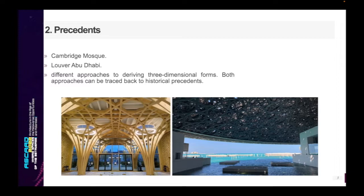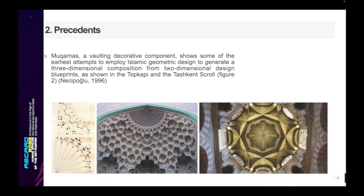Although these two projects employed Islamic geometric designs on non-flat surfaces, they show two different approaches to deriving three-dimensional forms, both of which can be traced back to historical precedents. Historically, Islamic geometric designs exist beyond flat surfaces. For instance, the Mukarnas — a vaulting decorative component — shows some of the earliest attempts to employ Islamic geometric designs to generate three-dimensional compositions, where two-dimensional design blueprints were used to guide the creation of three-dimensional forms, as shown in the Topkapi and Tashkent scrolls.